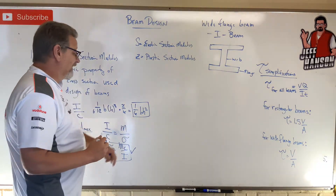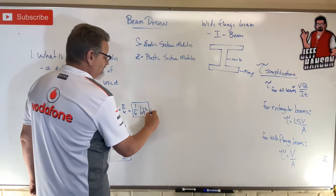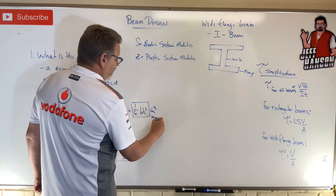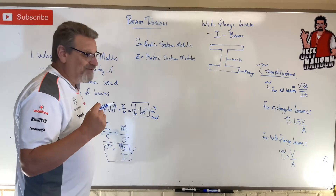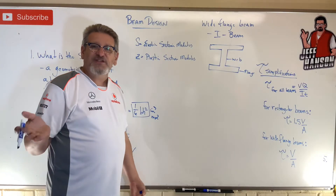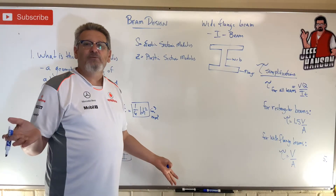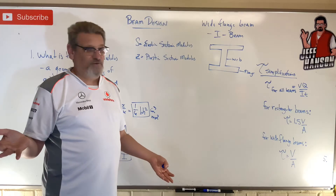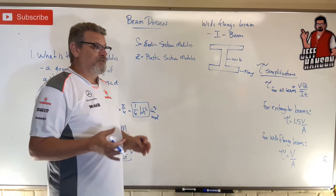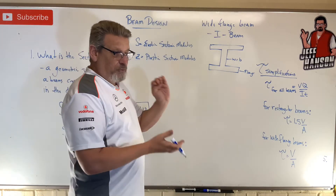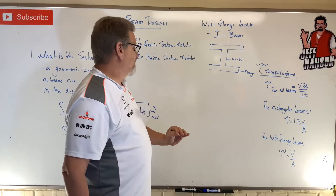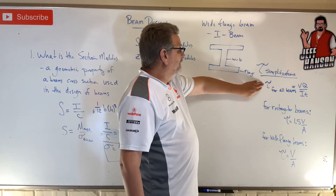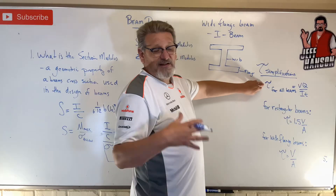The section modulus will be in units like inches cubed or millimeters cubed. It is not a volume — just like Q, remember? Q was in millimeters cubed but it's not a volume either. Both represent geometric properties of the cross section.